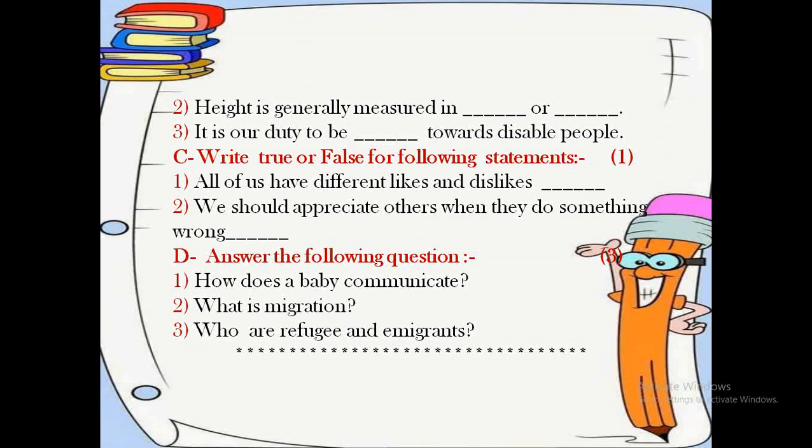Now coming on question number D, that is answer the following questions. In this question again you will have 3 sub-questions and each of them is of 1 mark. Question number 1: how does a baby communicate? Question number 2: what is migration? And question number 3: who are refugees and immigrants?